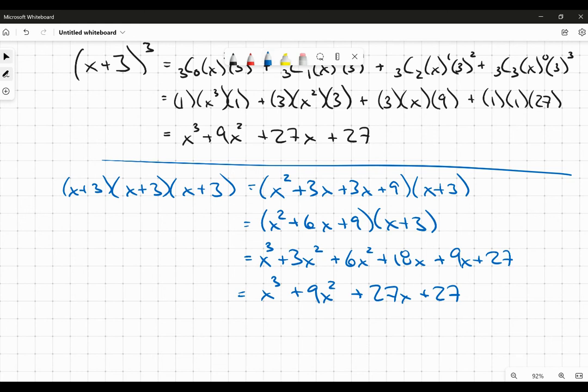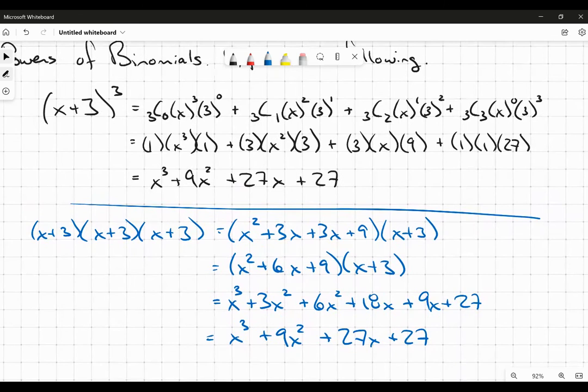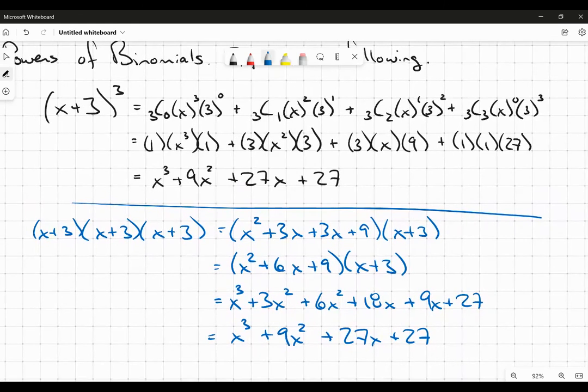But you're just going to see that as the exponent gets larger, that secondary method is going to become slower and really more clunky than the binomial expansion that we did initially.